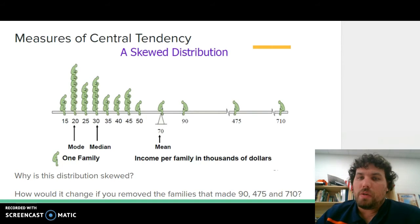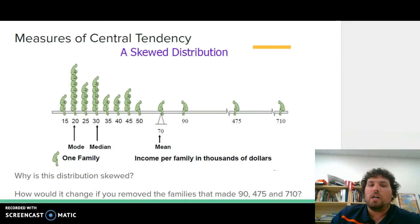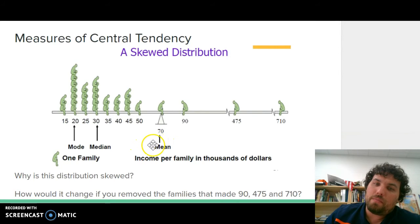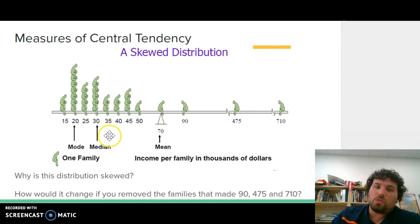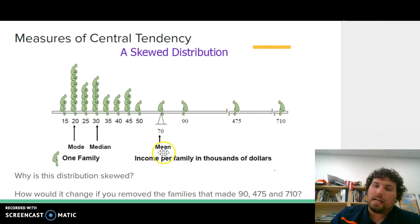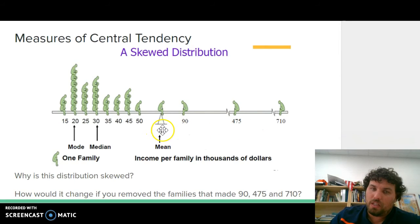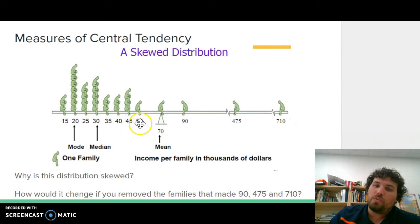Also in measures of central tendencies you have skewed distributions. You have the mean which is going to be 70 — that's the average of all the scores added up. You have the mode, which is the one recorded most, and the median is the middle score. The median is the most reliable of our three M's. The mean is the one most affected by outliers. Because you have one score of 710, a score of 475, and then 90 — three scores actually above the mean — but many scores fall below the mean. Those high outliers move the mean further away from the median and mode, giving you a skewed distribution.